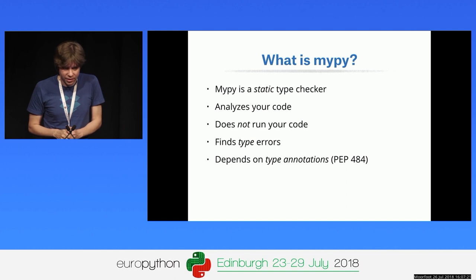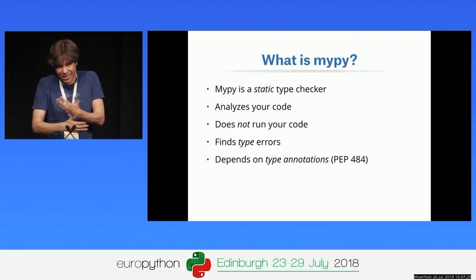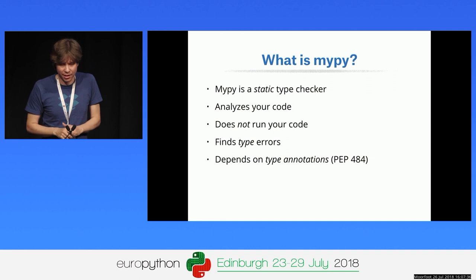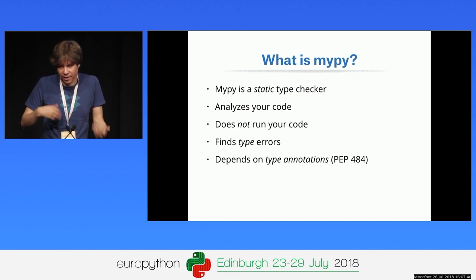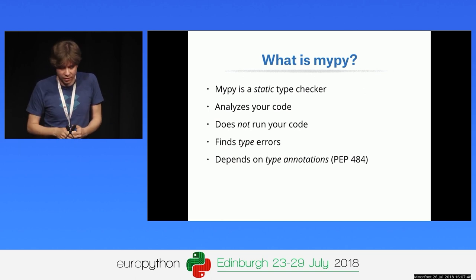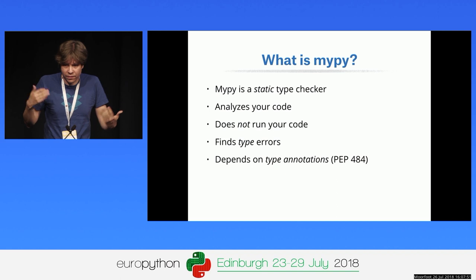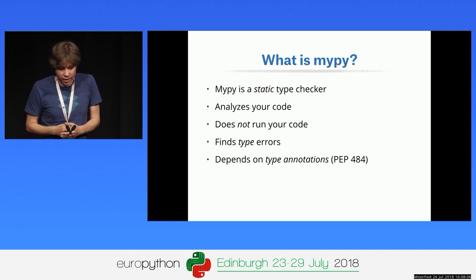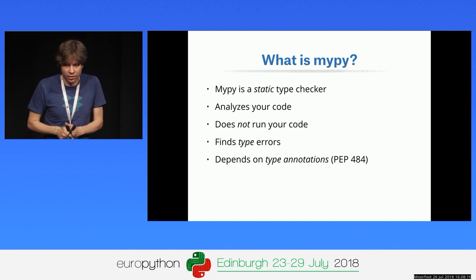Mypy is a static type checker. Static means it analyzes your code and tries to understand some aspects of it, but it doesn't actually run the code. It tries to find type errors — things like missing attributes, calling a function with the wrong number of arguments, wrong argument names, or wrong argument types. It needs type annotations to do useful type checking, which are standardized in PEP 484. Python 3.5 comes with a typing module in the standard library.